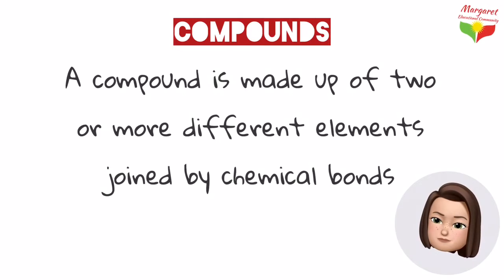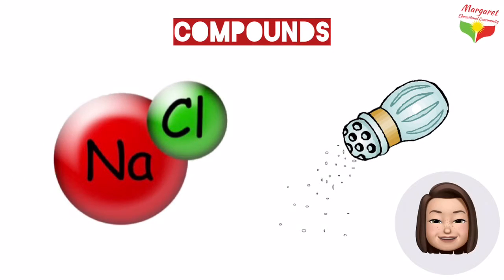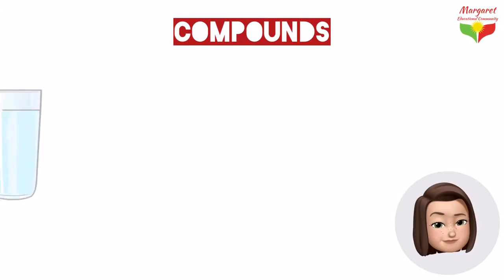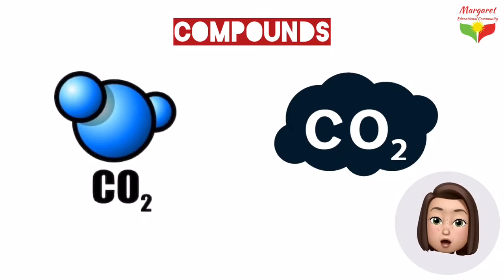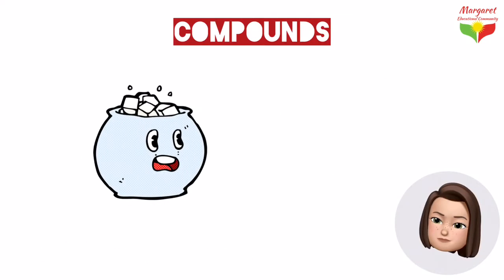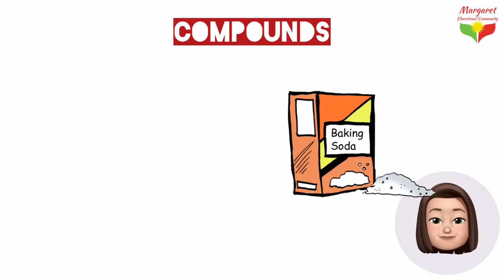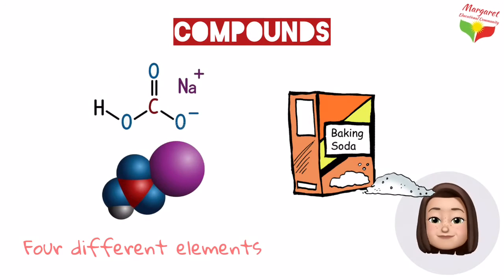Compounds are totally different from the elements that make them up. Most of the substances you see every day are compounds. For example, table salt is made of sodium and chloride — two different elements, so it's a compound. Water is hydrogen and oxygen. Carbon dioxide is carbon and oxygen. Sugar is made of carbon, hydrogen, and oxygen — three different elements. And baking soda is made of sodium, hydrogen, carbon, and oxygen. These are all compounds.